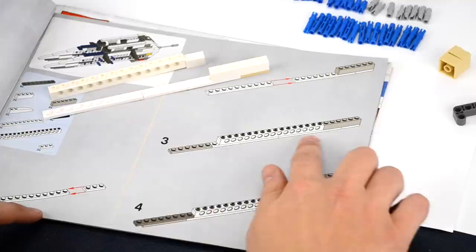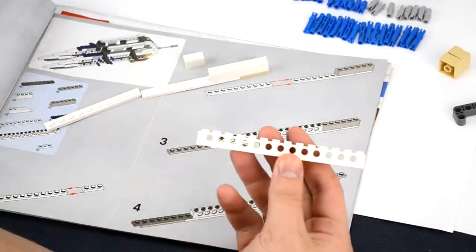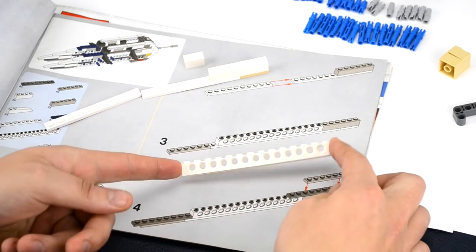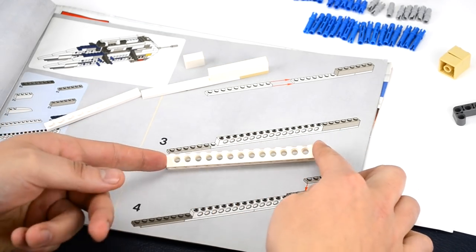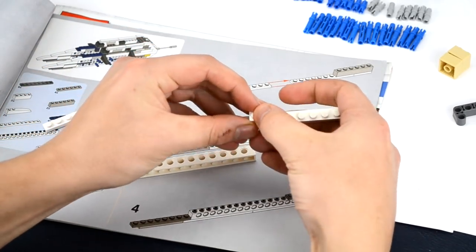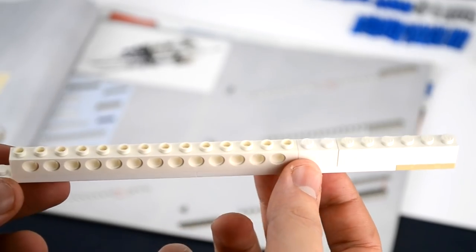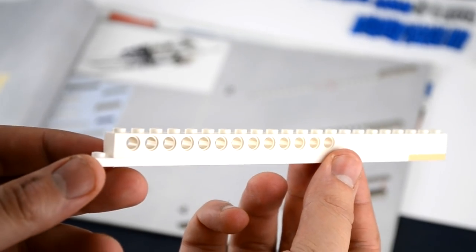On the first page of the instructions we need a 16M Technic Beam however we only have a 14M Technic Beam from the gunship. To solve this we will simply use a 2x1 white brick as this is not a critical component of the build.